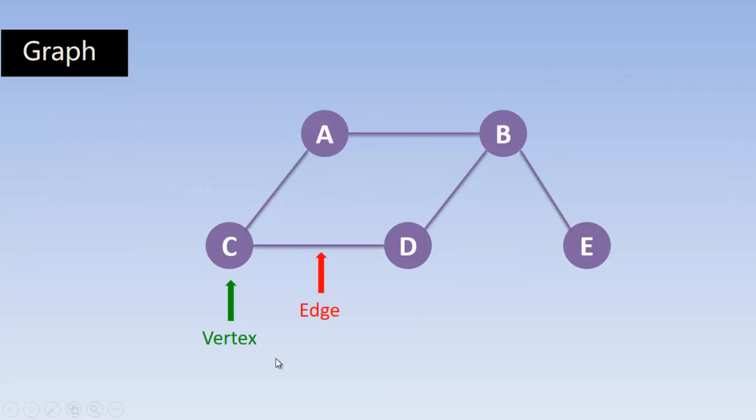So here this is a graph. In this graph, the lines are said to be edges. The line between A and B is an edge, A and C is an edge. The line between C and D, D and B, and B and E are all edges.